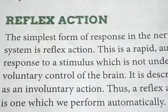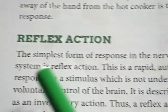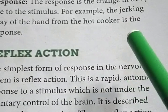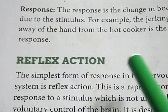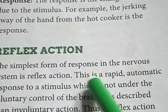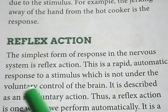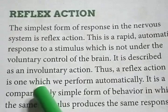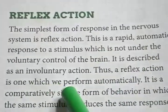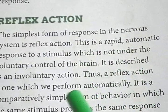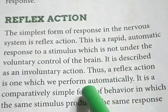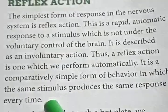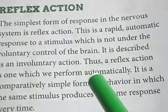Next is reflex action. The simplest form of response in the nervous system is called reflex action. Normally, reflex action does not involve the brain directly. It is a rapid, automatic response to a stimulus which is not under the voluntary control of the brain. It is described as an involuntary action — one which we perform automatically. It is a comparatively simple form of behavior in which the same stimulus produces the same response every time.